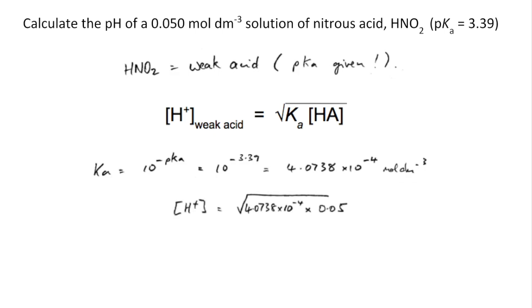Now we can put that into the square root and we can find the H plus concentration. And remember that we use the original concentration of the acid because that dissociation is so small. And then the H plus concentration comes out as that. So the pH to two decimal places is 2.35.